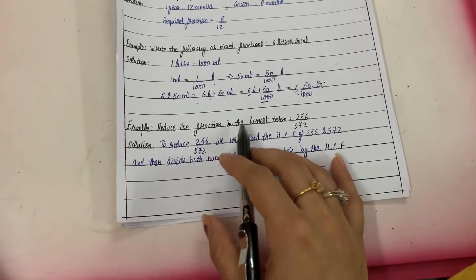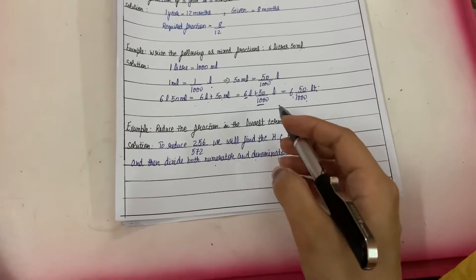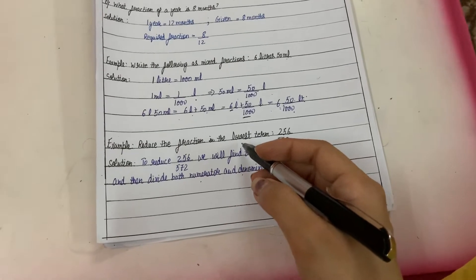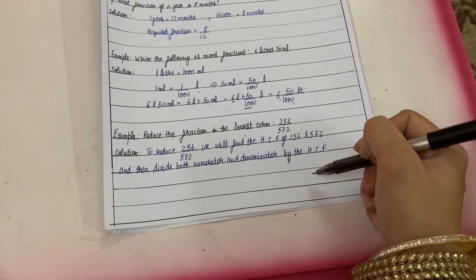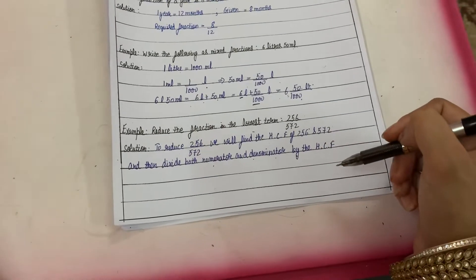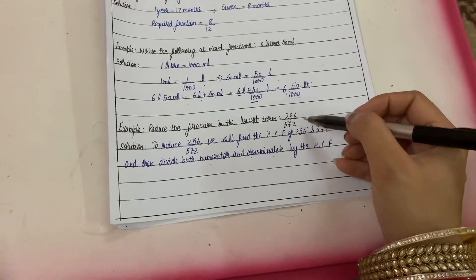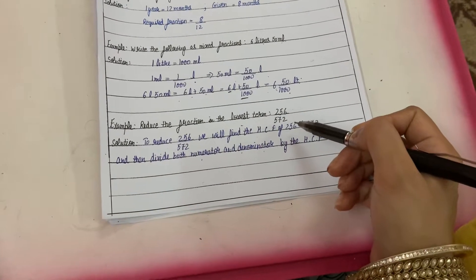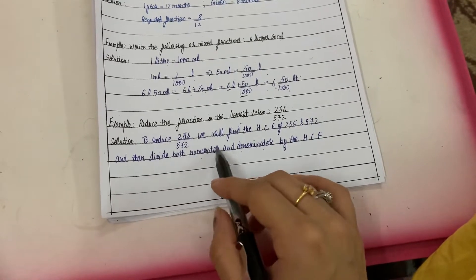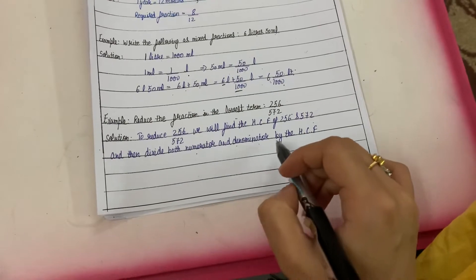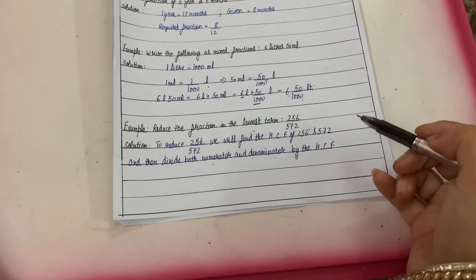Next example: reduce the fraction to the lowest term — that means the simplest form. To reduce a fraction to its lowest term, we find the HCF of numerator and denominator, then divide both by the HCF. It is better to find the HCF directly and divide. So for 256 upon 572, we will find the HCF of 256 and 572.